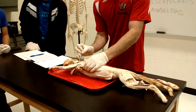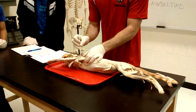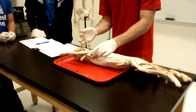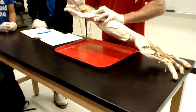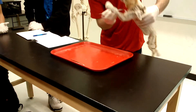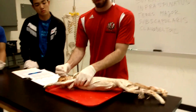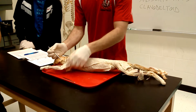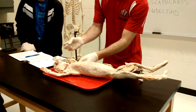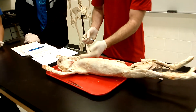Going over the full list again: supraspinatus, infraspinatus, teres major, subscapularis, spino deltoid, acromio deltoid in the middle, clavo deltoid or clavobrachialis anteriorly. Then for arm muscles — lateral side: long head of triceps, lateral head of triceps, brachialis. Anterior side: long head of triceps, medial head of triceps, bicep brachii, and finally epitrochlearis.